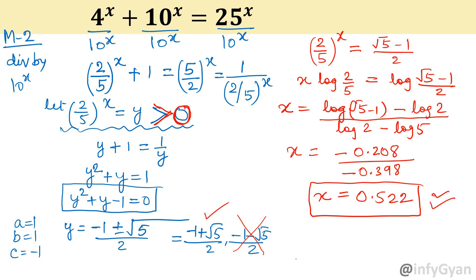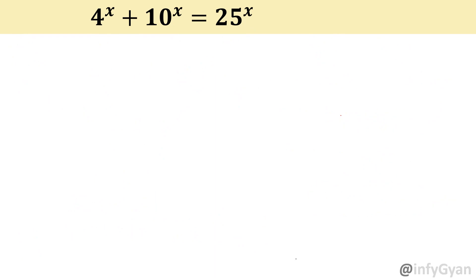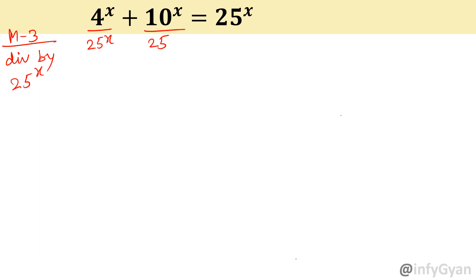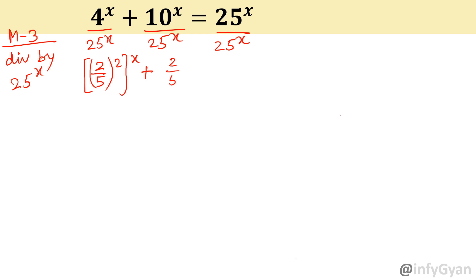Now come to the third method — divide by 25 power x. Dividing each term by 25 power x, this will be (2 over 5) whole square whole x plus (2 over 5) whole x equal to 1.